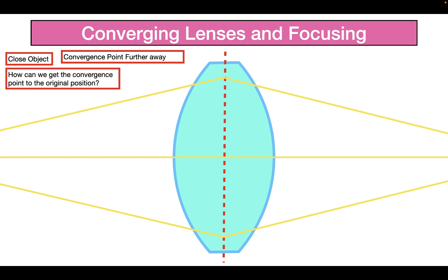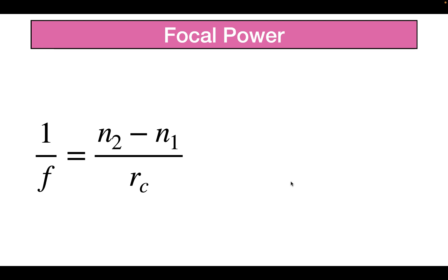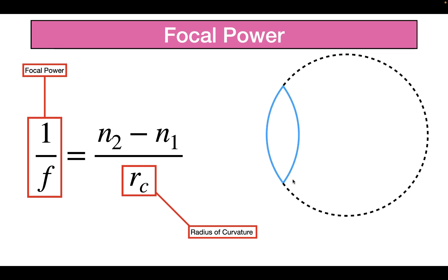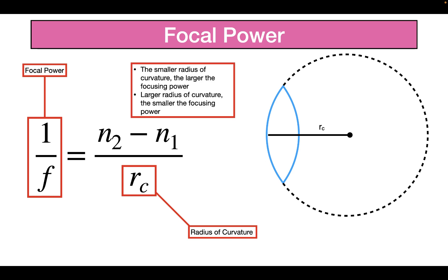But how can we get the convergence point back to the original position? The main thing we have to talk about is focal power, given by the equation: 1 over the focal length equals n2 minus n1 over the radius of curvature. The radius of curvature describes how curved your lens is — you find it by fitting the lens to a circle and measuring the radius. The smaller the radius of curvature, the larger the focusing power, and vice versa.